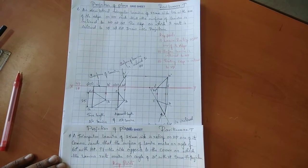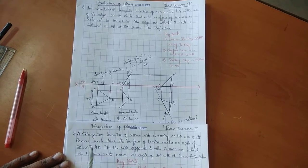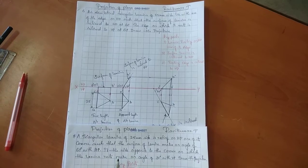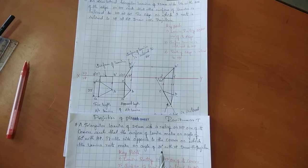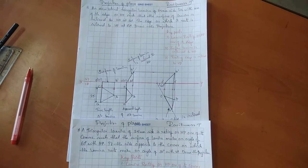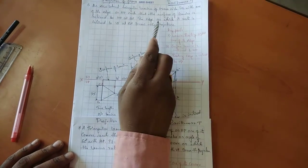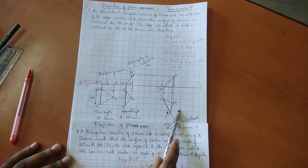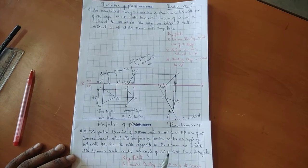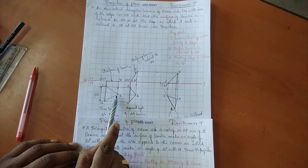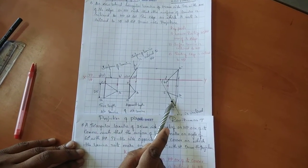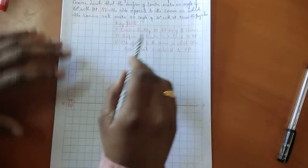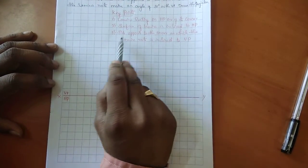See the second sentence: the surface of lamina makes an angle of 60 degrees with HP. And the third sentence: if the side opposite to the corner on which the lamina rests makes an angle of 30 degrees with VP. In this problem, the edge on which it rests is inclined to VP at 60 degrees — meaning the resting edge on HP is inclined to VP. But this problem is reverse: here, the resting corner's opposite side is inclined to VP. Understand the problem very carefully.